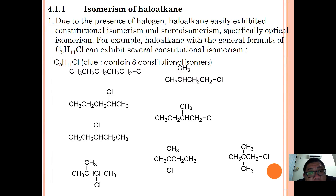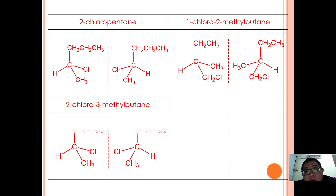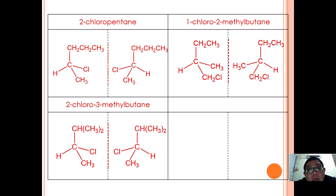For C5H11Cl there are eight constitutional isomers, of which several are optically active. The chiral carbon atoms are found in 2-chloropentane (one chiral carbon), 1-chloro-2-methylbutane (one chiral carbon), and 2-chloro-3-methylbutane (one chiral carbon). The enantiomeric pairs for each of these three compounds can be drawn accordingly, illustrating their optical isomerism.